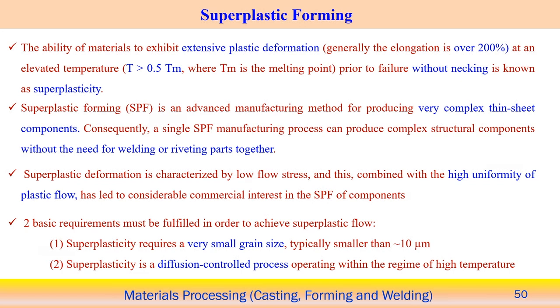We will now look at another topic associated with forming operations, known as the superplastic forming process. Superplastic means the extent of deformation is large — when there is extensive plastic deformation during processing, elongation can typically be more than 200%. This process is known as superplastic forming. A key condition is that temperature should be high enough — above 50% of the melting point temperature. Prior to failure, the material is able to deform more than 200% elongation without necking. That is the definition of superplastic forming.